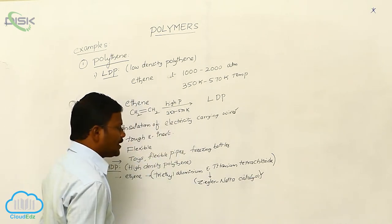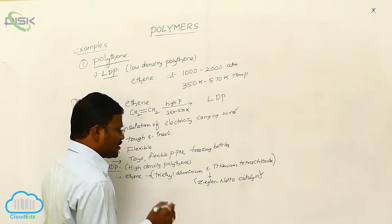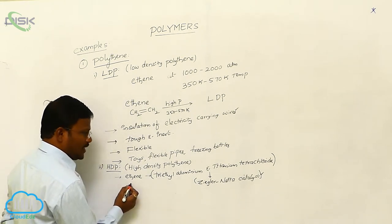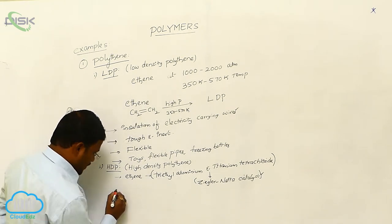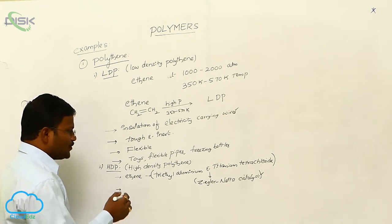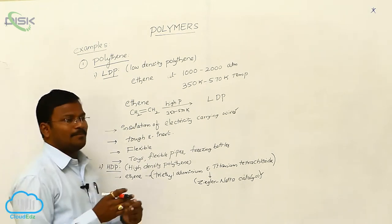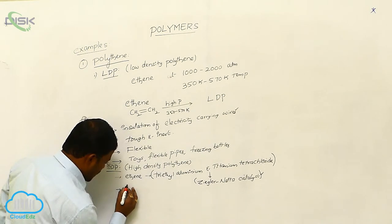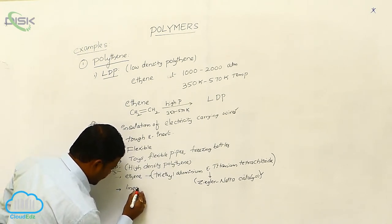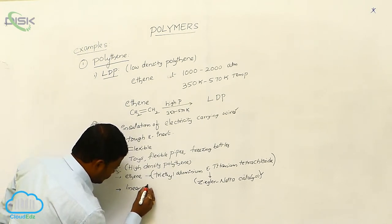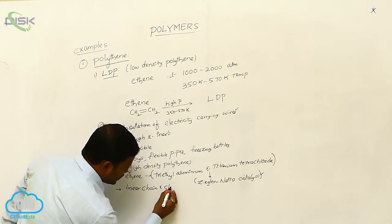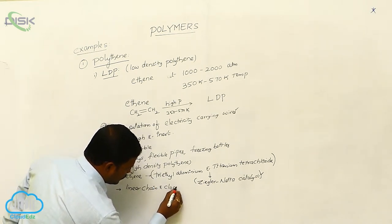Ziegler-Natta catalyst is used in addition polymerization to produce high-density polyethylene from ethylene. The high-density polyethylene produced by this method is arranged in linear chains, and these linear chains are very closely arranged to each other.